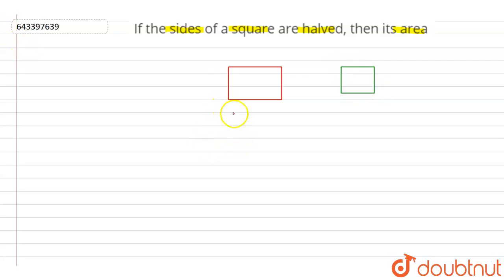So let the side of the square be a, then the side of a square after halving is a upon 2.